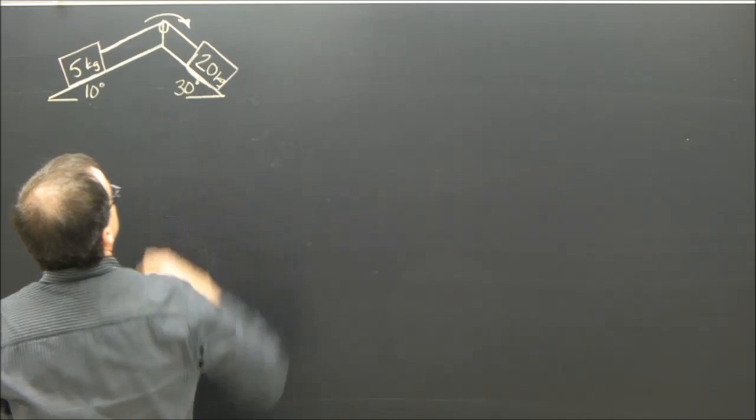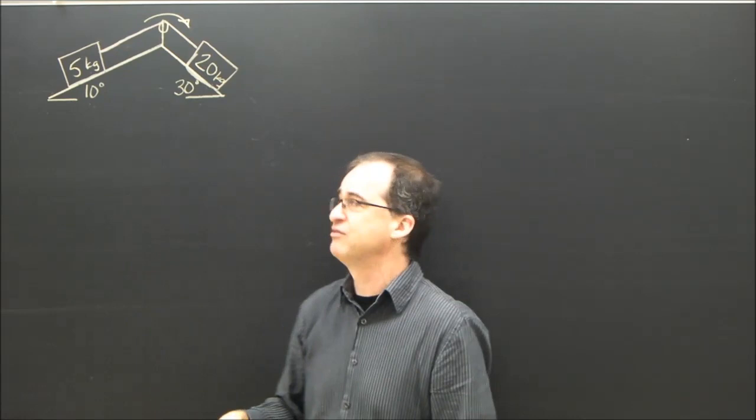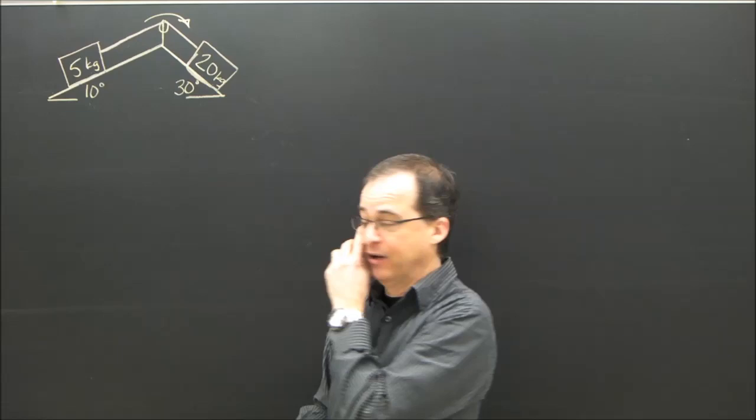So, I think it's going to go this way. It's going to accelerate that way. I predict that because the 20 kilograms has got more gravity on it than the 5, and more of it is in the down direction, it's on a steeper slope. So I kept it simple enough that you could figure that out.